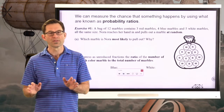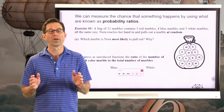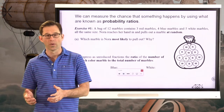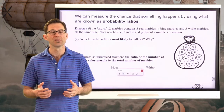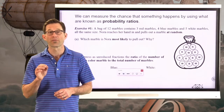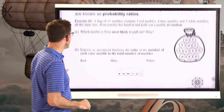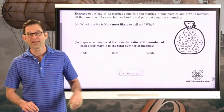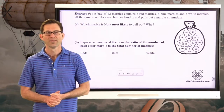We can measure the chance that something happens by what is known as using a probability ratio. We're always going to be expressing these ratios, at least in this lesson, in terms of fractions. Let's jump right into it and see how we do that with a classic case of marbles in a bag.